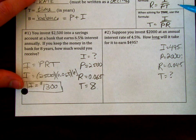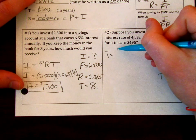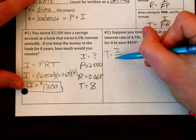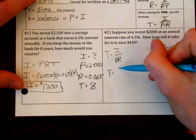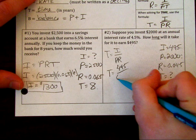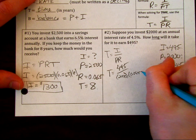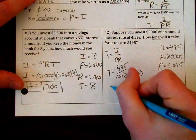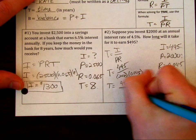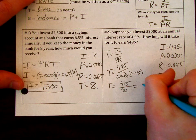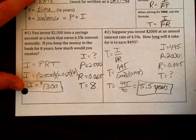We can use these formulas that we have. We say T equals I over principle times rate. Substitute those out: $495 in the numerator and $2,000 times 0.045 in the denominator. Make sure that you're calculating carefully. We're going to end up with $495 over 90, which equals 5.5. Since it's time, it's going to be 5.5 years.